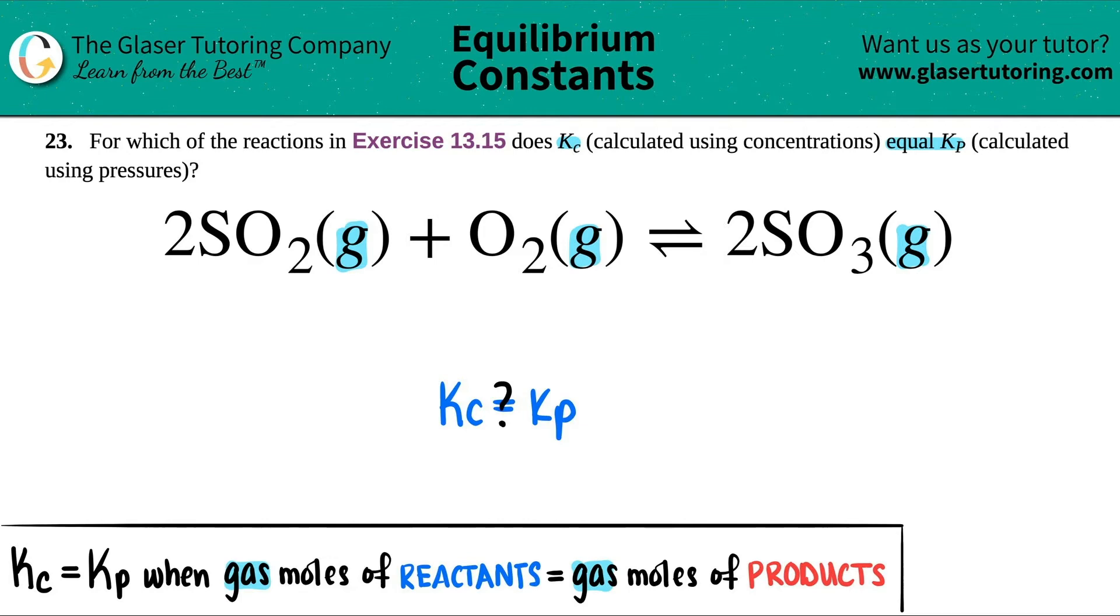The moles are coming from the balanced equation, the big numbers, the coefficients. So let's see, I have two of these. I don't see a number in front of this, so that's a one. And then I have a two over here. So two plus one, that's three. So I have three total moles on the reactant side.